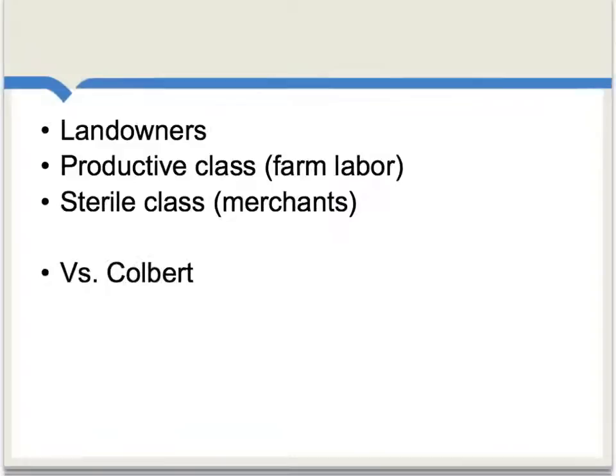In the Tableau, there are three major branches of economic activity. There are the landowners, there's what Canet calls the productive class, which is basically farm labor, and there's also what he calls the sterile class, which are traders and merchants.